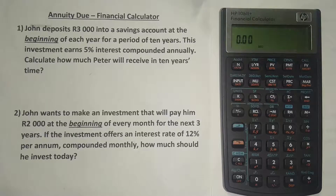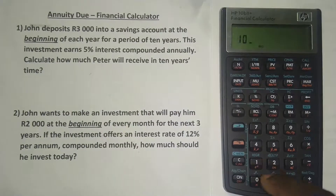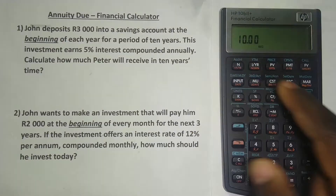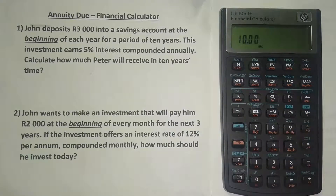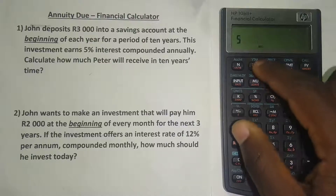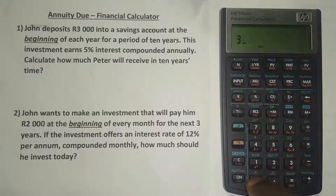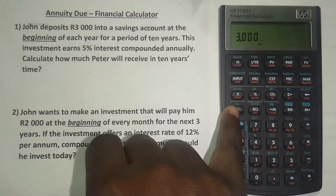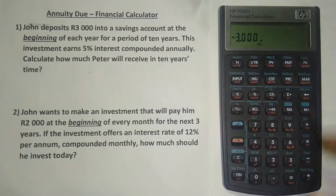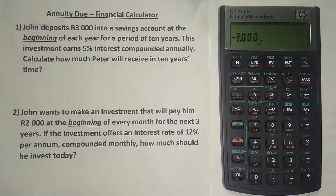Now we can do the calculation. The number of years is 10, so we press 10 and then N. The interest rate is 5%, so we press 5 and then I/YR. The payment is 3,000 because he's making this payment at the beginning of each year for the next 10 years. So we press 3,000 and then put it as a negative using the plus/minus sign. It's negative because he's paying into a savings account — the money is leaving his account.